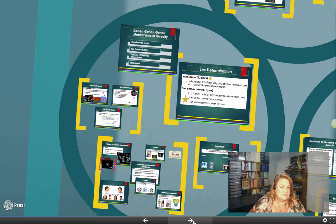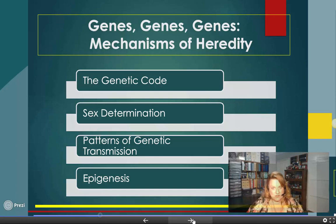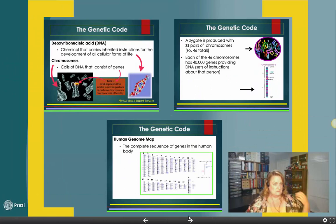With IVF it's about a 40% success rate, but with adoption you 100% get a kid. So now let's talk more about genes and heredity — how that kid got to look like him and how you get to look like you.